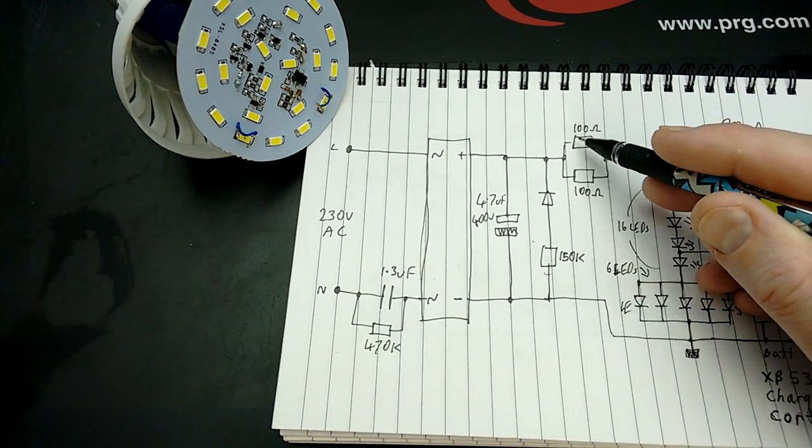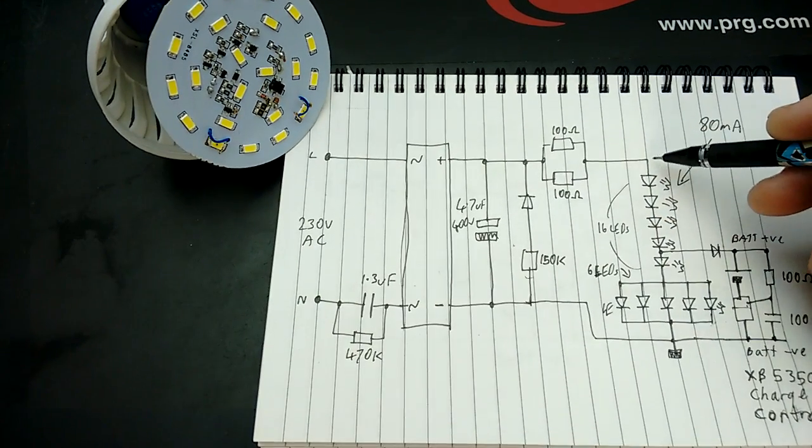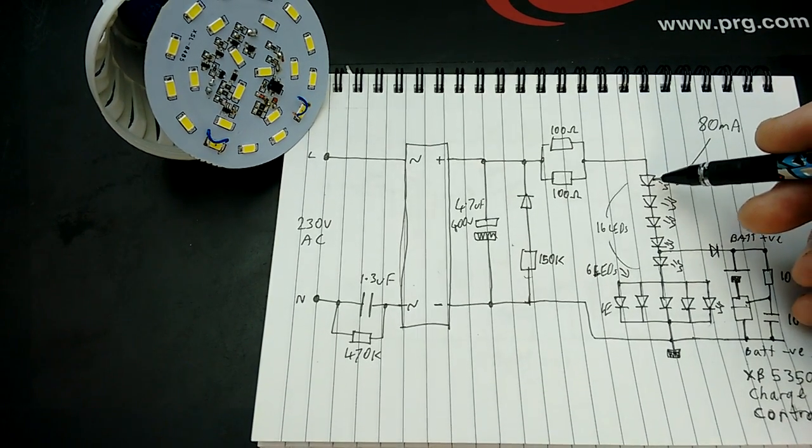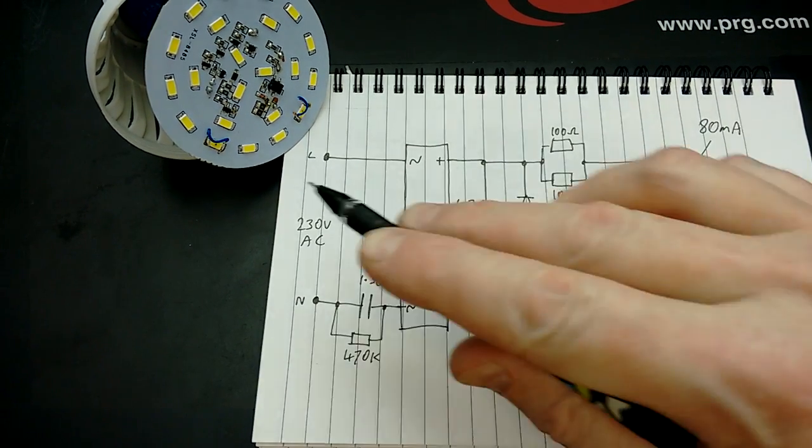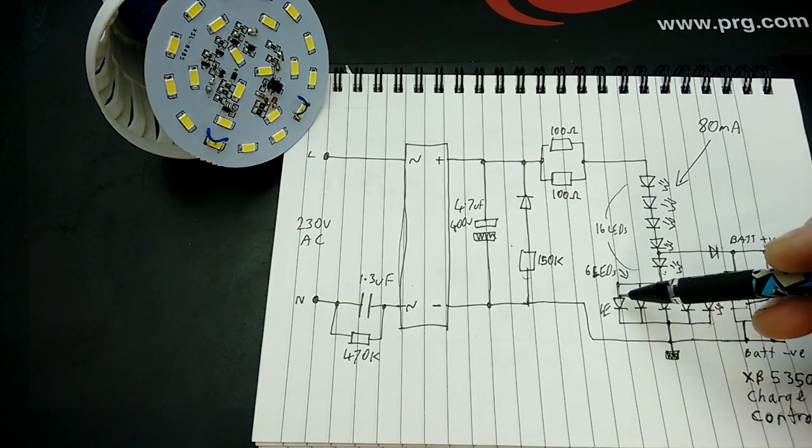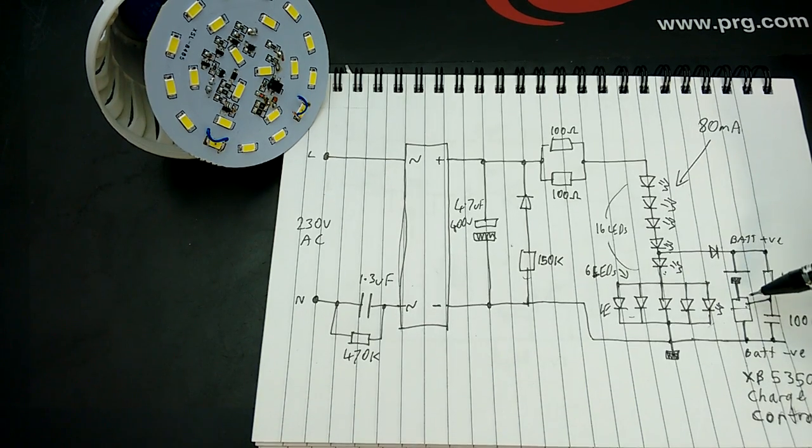Then it's got the classic set of 200 ohm resistors in series, which seems very common in these lights. And then it's got the string of LEDs. But interestingly, it's got the standard string of 16 LEDs that run normally off the main supply. But then it's also got six LEDs in parallel.